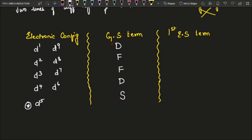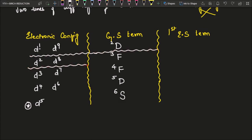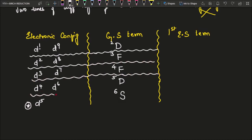Now how do we remember the multiplicity? For D1 there is 1 electron, so it is a doublet: 2D. For D2 it is a triplet, D3 a quartet, D4 a quintet, D5 a sextet — so 2, 3, 4, 5, 6. Therefore: D1 and D9 → doublet D; D2 and D8 → triplet F; D3 and D7 → quartet F; D4 and D6 → quintet D; D5 → sextet S.